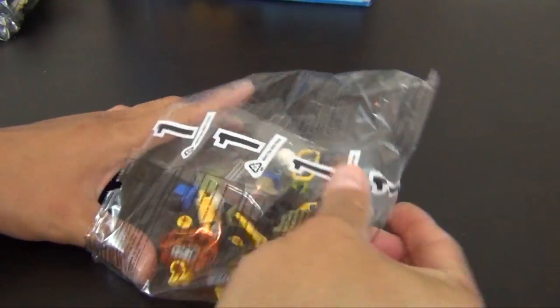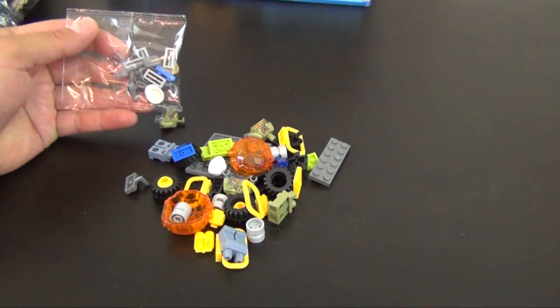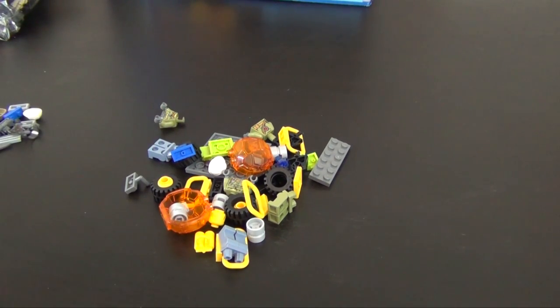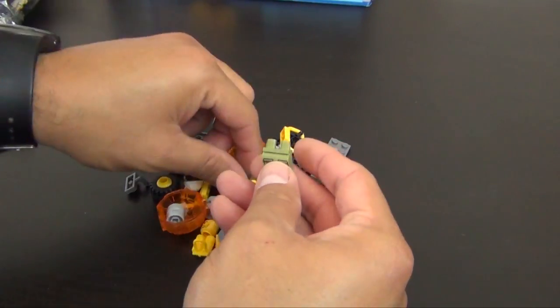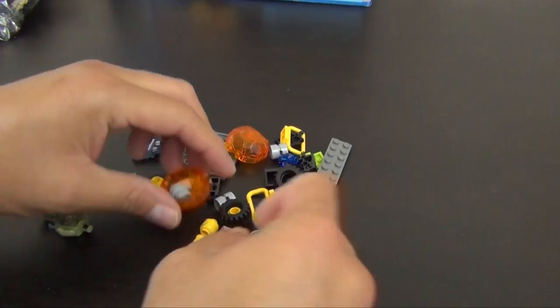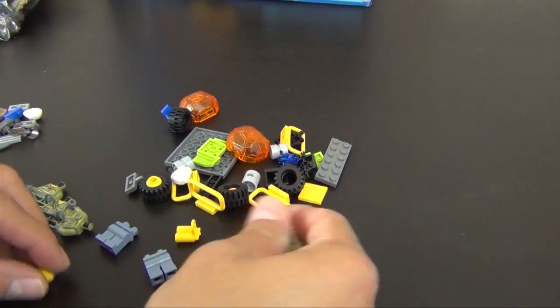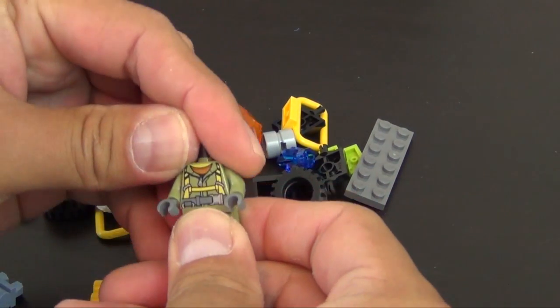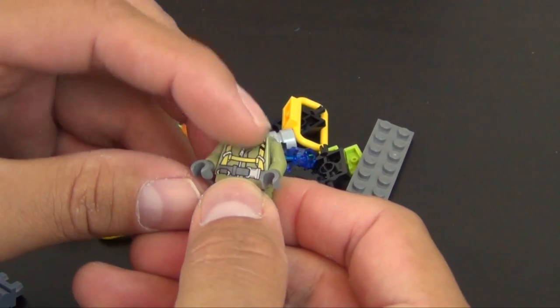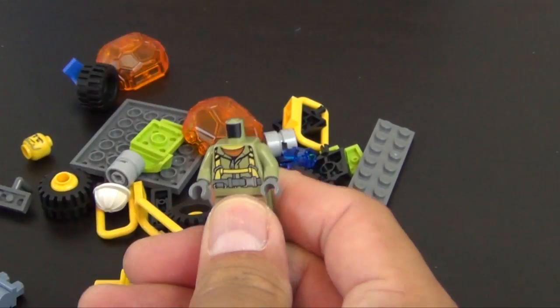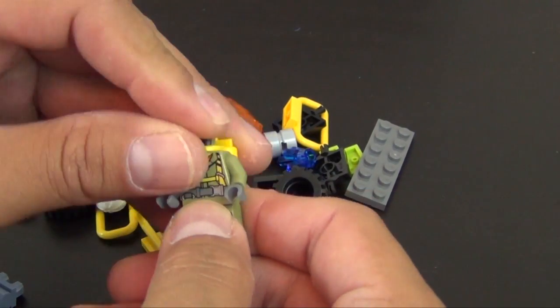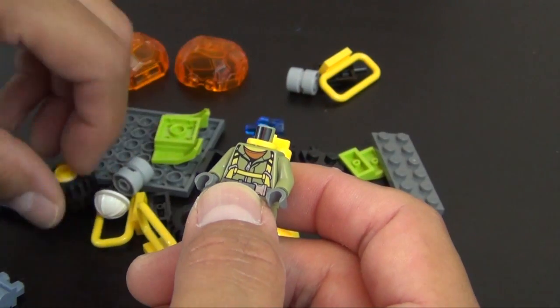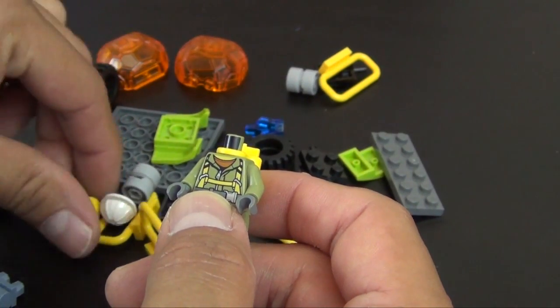Looks like we have a couple minifigures in here. There's also a small bag of parts. We'll begin with the explorers. Looks like we're going to build all the minifigures for the set from this first bag. We start with this guy who has yellow straps over the shoulders with an air tank. I got a couple heads stuck in these tires.